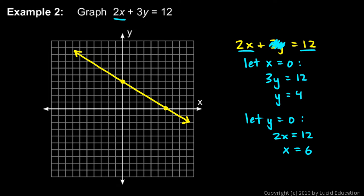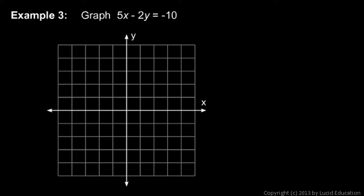That's a useful technique for graphing a line whenever you have the equation in this form: something times x plus something times y is equal to some number. Let's look at a couple of other examples. 5x minus 2y is negative 10.